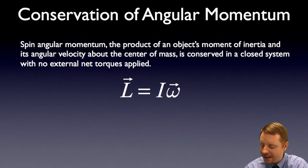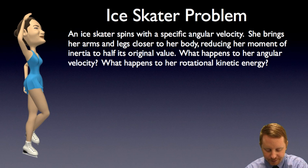Let's see how we can apply that to a couple of interesting problems, starting with the ice skater problem. An ice skater spins with some specific angular velocity. As she spins, she pulls her arms and legs closer to her body, which reduces her moment of inertia to half of its original value. What's going to happen to her angular velocity, and what happens to her rotational kinetic energy? You have to remember, she pulls her arms and legs in, she reduces her moment of inertia.